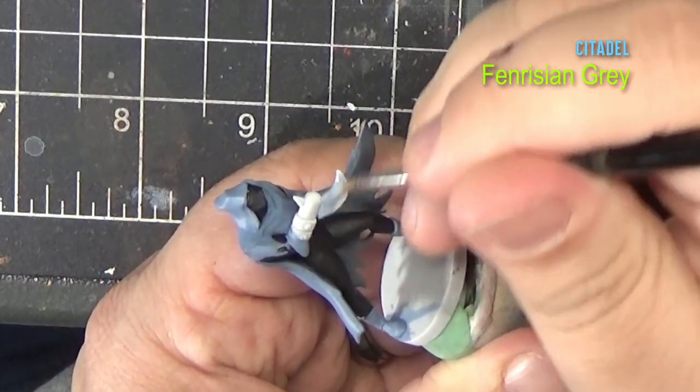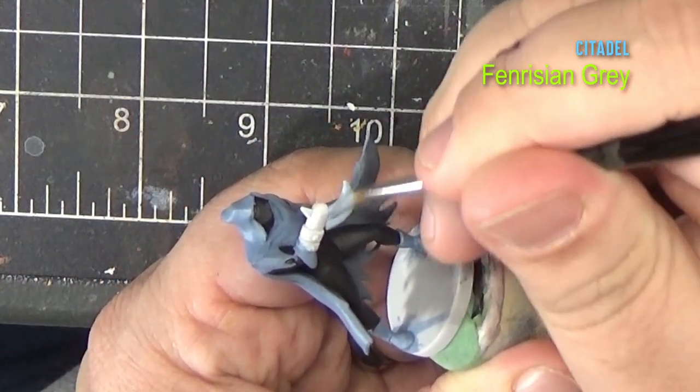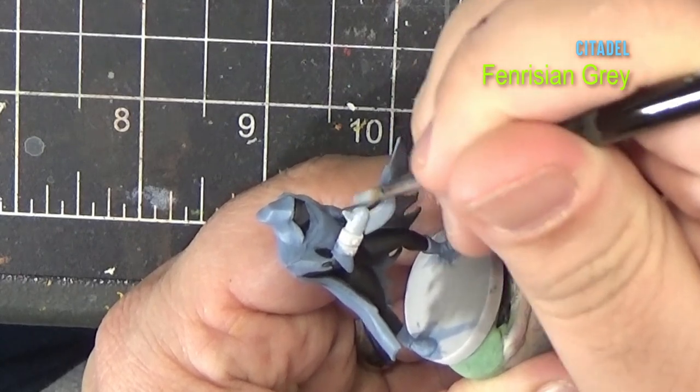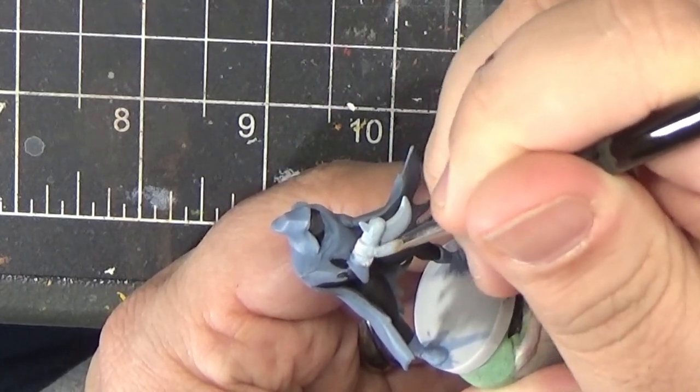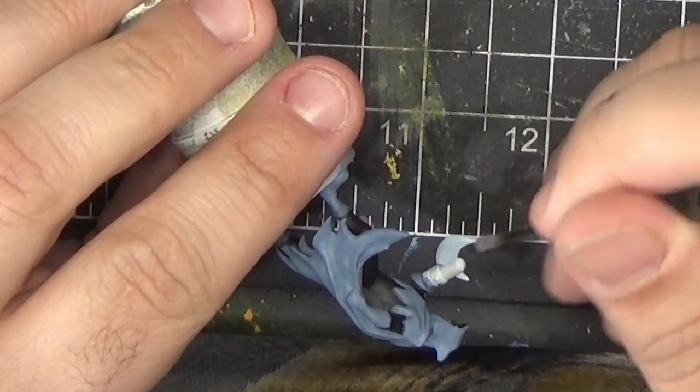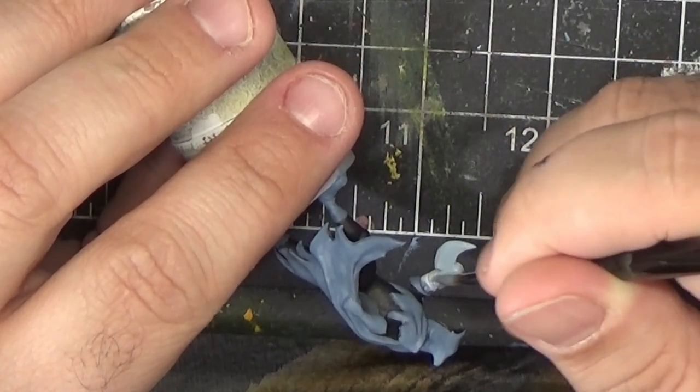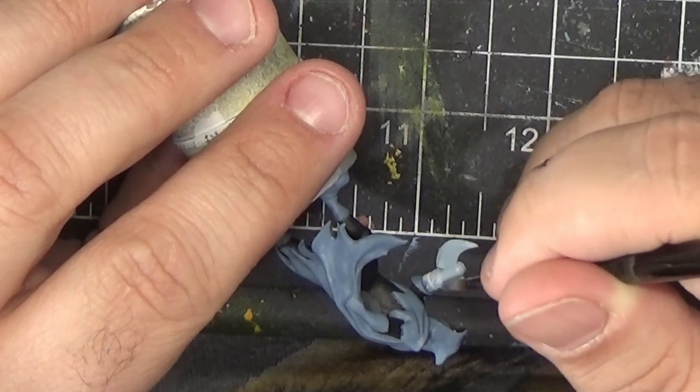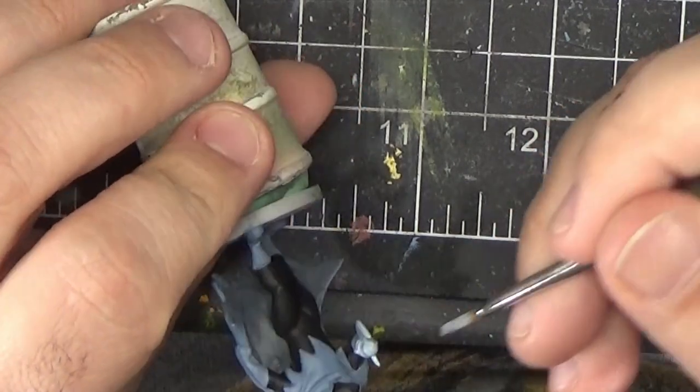Now we use Fenrisian Gray and paint the scythe. If you've watched any of the previous episodes in this series, you'll know that I often forego any kind of highlighting on these miniatures in order to keep with the animated cell style. But since there's not a lot of color variation on Phantasm, I wanted to add a little bit more visual interest.